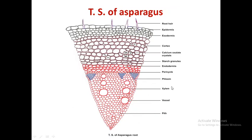The xylem contains lignified parenchymatous cells. Vessels are also present in the transverse section of asparagus. The pits contain both lignified and non-lignified parenchymatous cells. These are the different microscopic characteristics of asparagus.